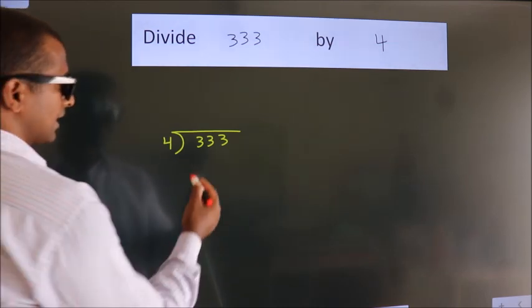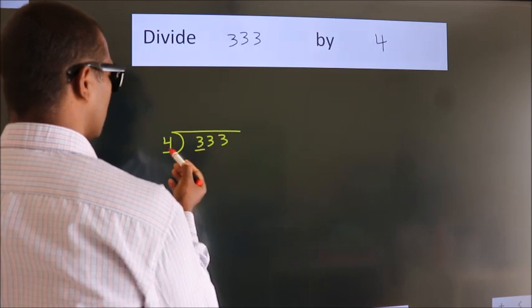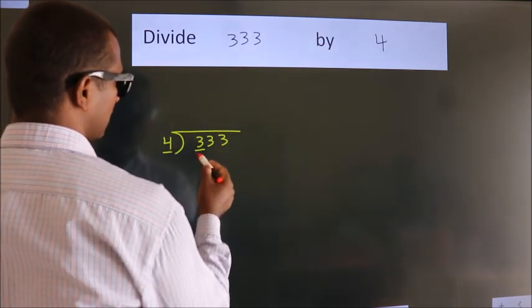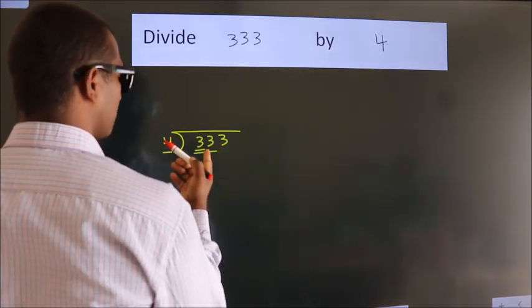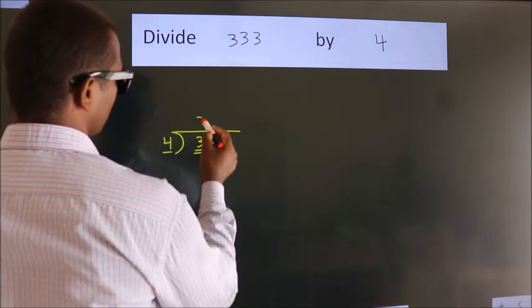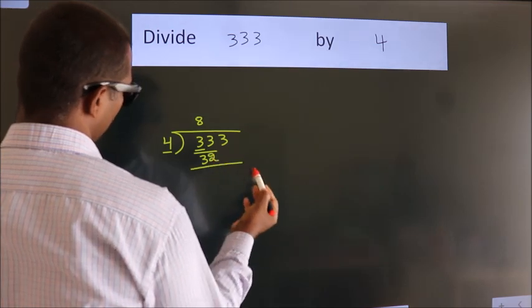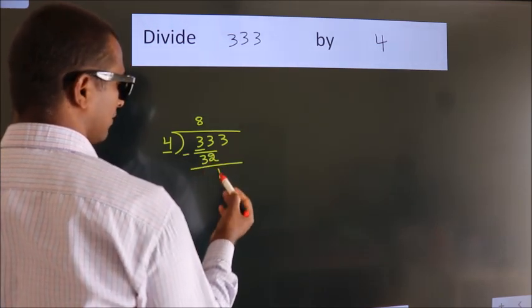Next, here we have 3, here 4. 3 is smaller than 4, so we should take 2 numbers: 33. A number close to 33 in the 4 table is 4 times 8 equals 32. Now we should subtract. We get 1.